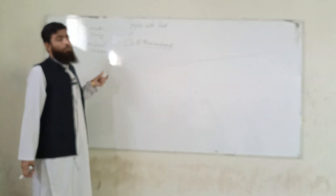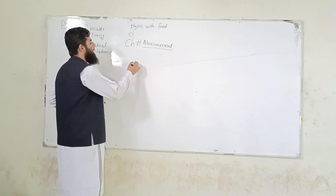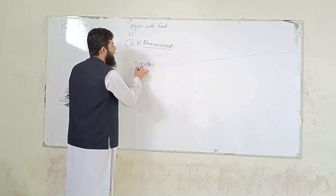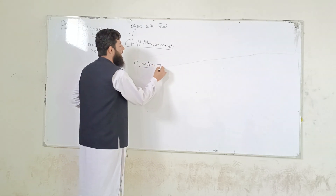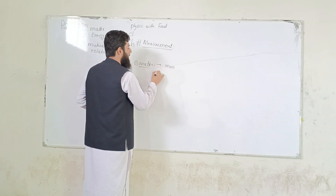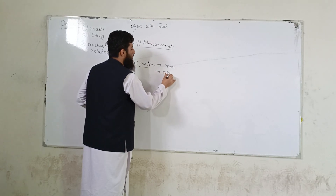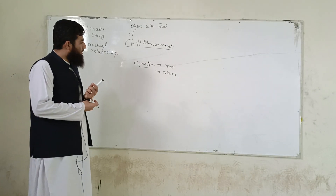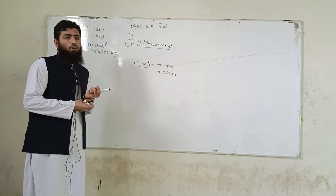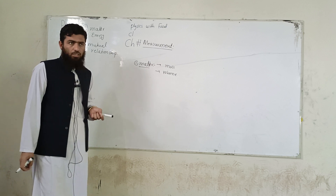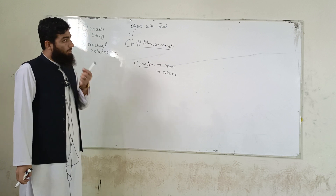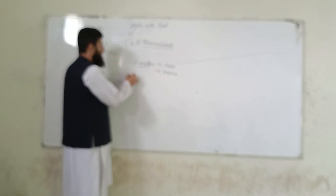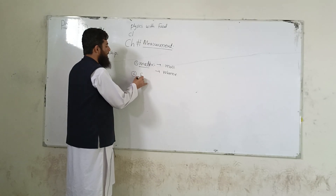Matter ہمارے پاس کیا ہے؟ Matter ہر وہ چیز ہے جس کی دو چیزیں ہوتی ہیں: سب سے پہلے اس کی mass ہوتی ہے اور دوسرے نمبر پر volume۔ ہر وہ چیز جس کی mass اور volume ہوتی ہے وہ matter کی category میں آتی ہے۔ Normally جو solids ہیں، liquids ہیں، gases ہیں — یہ تین matter کے states میں آتے ہیں۔